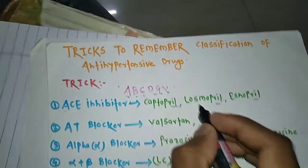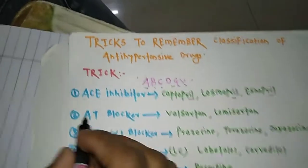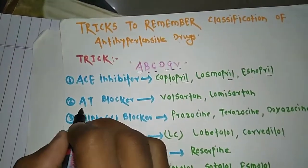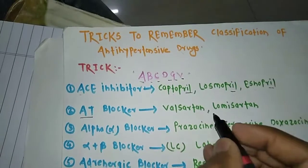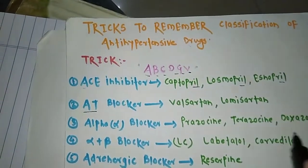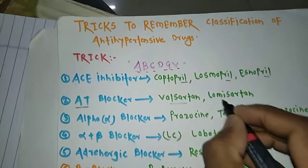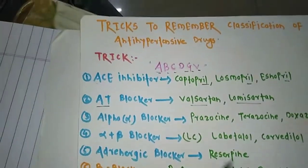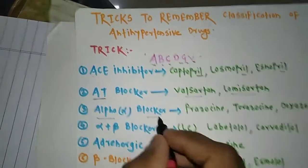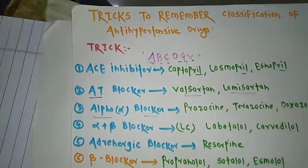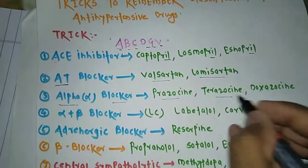The second A is AT blocker — Angiotensin receptor blocker. All '-sartan' drugs come under this category, such as losartan. The third A is Alpha blocker. Examples of alpha blockers include prazosin, terazosin, and doxazosin.